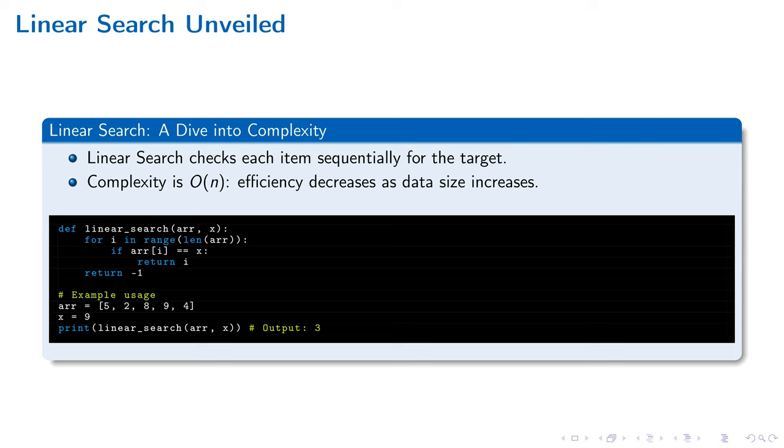Moving ahead, linear search's simplicity belies its potential inefficiency, particularly with larger collections, by necessitating a review of every element. This method, characterized by O(n) complexity, accentuates the value of algorithmic complexity analysis in enabling quicker data access strategies. Acknowledging the linear escalation in operations with growing data volumes is vital for appreciating the importance of algorithmic complexity in computational optimization.